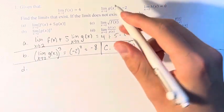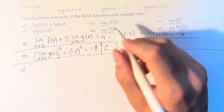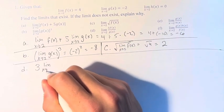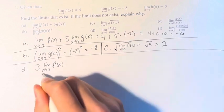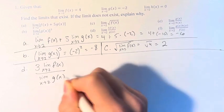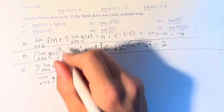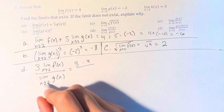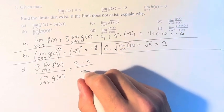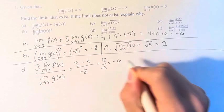In d, we have the limit as x approaches 2 of 3 times f of x over g of x. So this is equal to 3 times the limit as x approaches 2 of f of x, over the limit as x approaches 2 of g of x. We can just plug this in: this is 3 times 4, over negative 2, which is equal to 12 over negative 2, or negative 6.